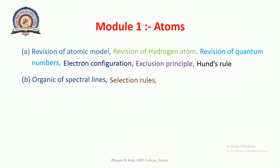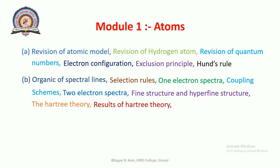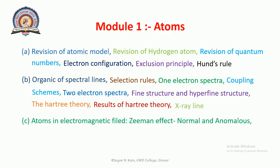This covers Selection Rules, one-electron spectra, coupling systems, two-electron spectra, fine structure and hyperfine structure, the Hartree theory, results of the Hartree theory, and X-ray lines. Then, Atoms in an Electromagnetic Field: Zeeman Effect — both Normal and Anomalous Zeeman Effect — Paschen-Back Effect, and Stark Effect.